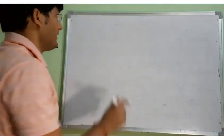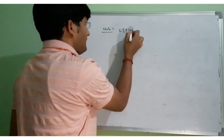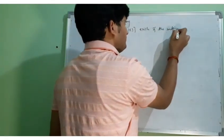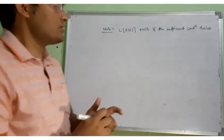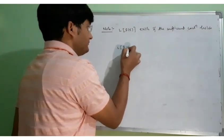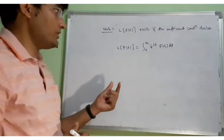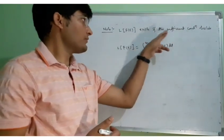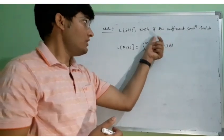Now let us prove mathematically that if the sufficient conditions hold, the Laplace of F(t) will exist. The Laplace of F(t) equals the integral from 0 to infinity of e to the power minus st times F(t) dt. To prove it exists, we will prove that the value of this integral is finite. Let us evaluate the modulus of this integral.